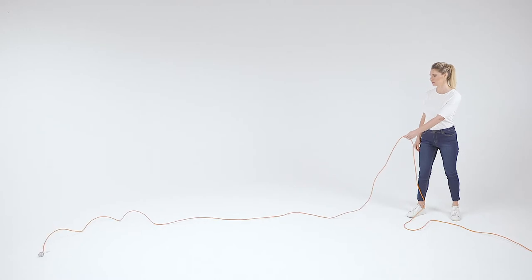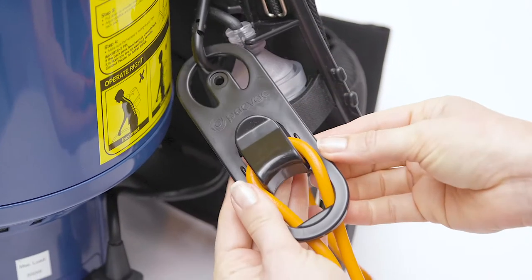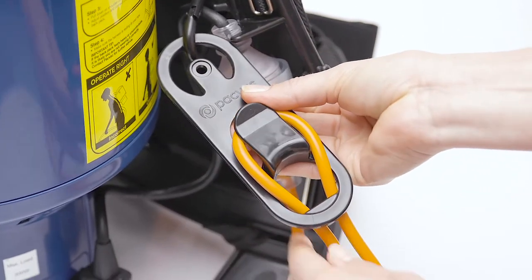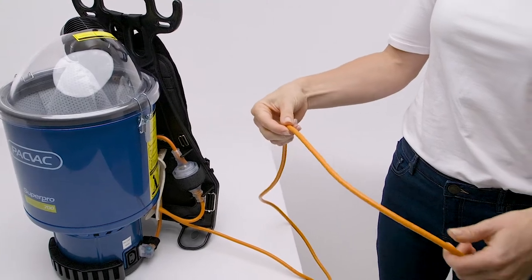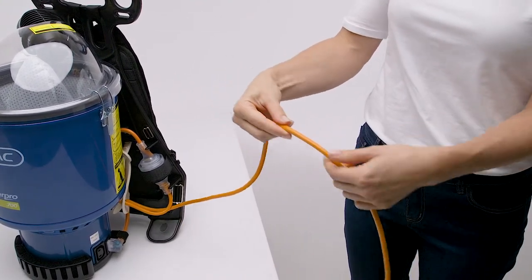Always fully extend the power cord before connecting it to the power source. Inspect behind the anchor point on the cord restraint and loosen daily. Check the power cord for cuts, abrasions, and exposed wiring to ensure it is safe to use.